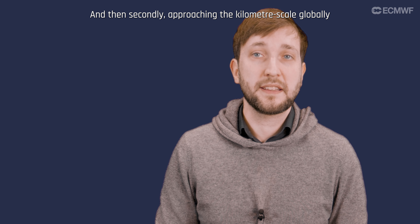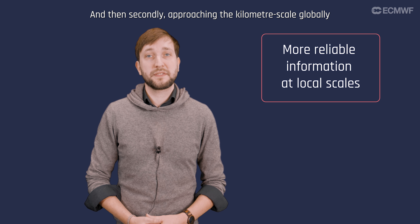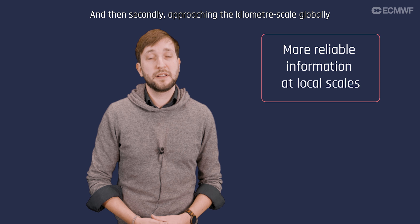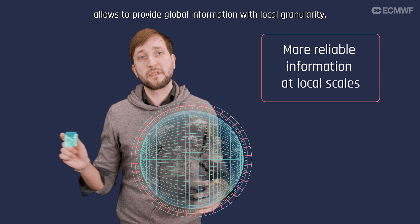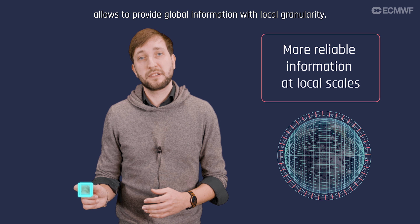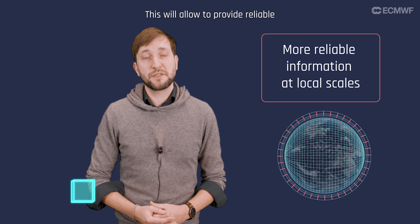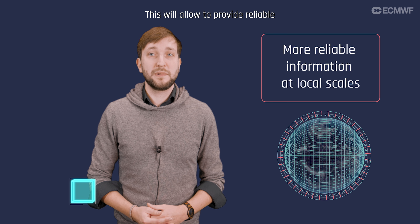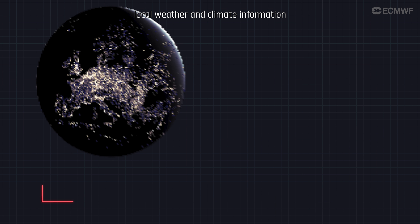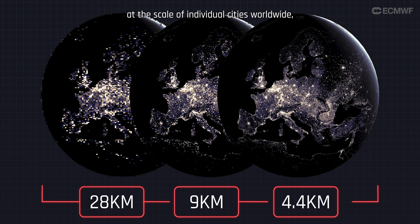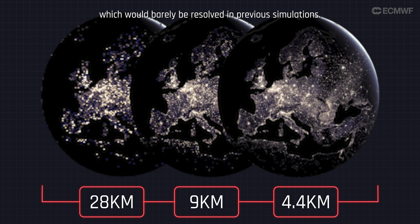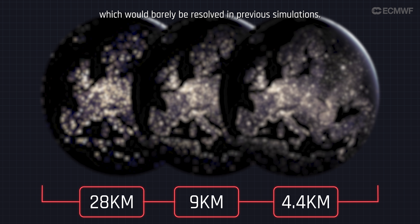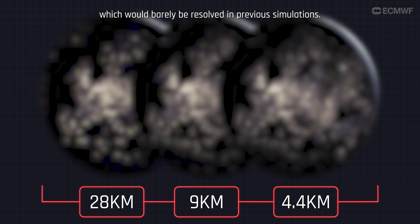Approaching the kilometer scale globally allows us to provide global information with local granularity. This will allow us to provide reliable local weather and climate information at the scale of individual cities worldwide, which would be barely resolved in previous simulations.